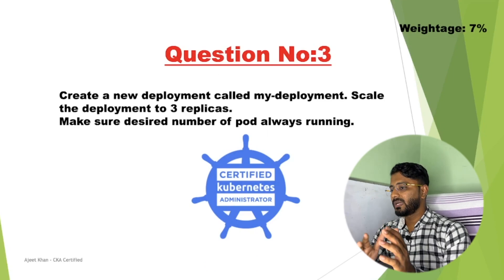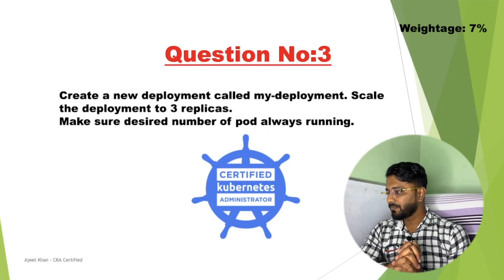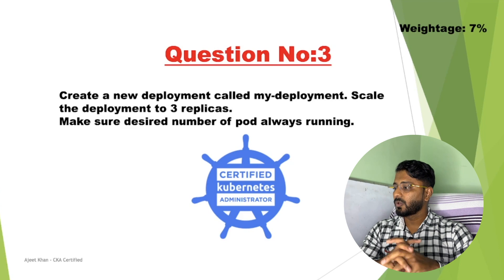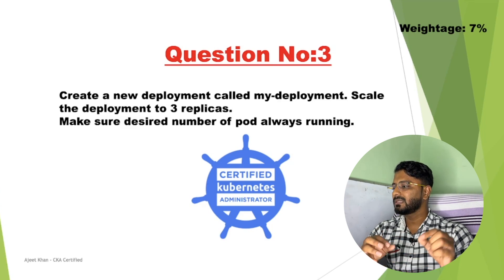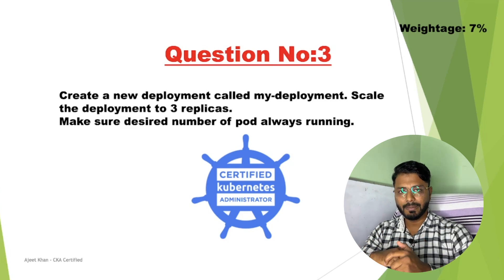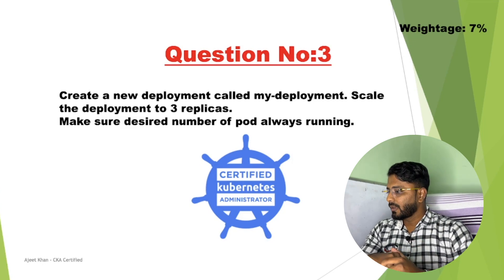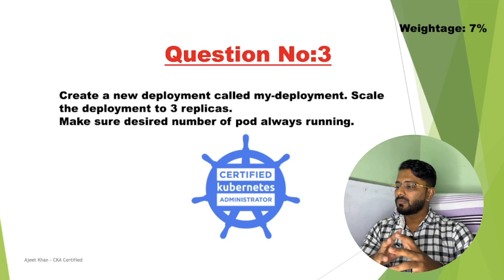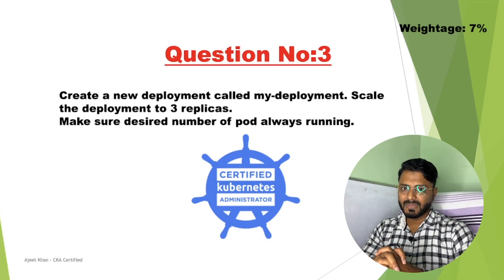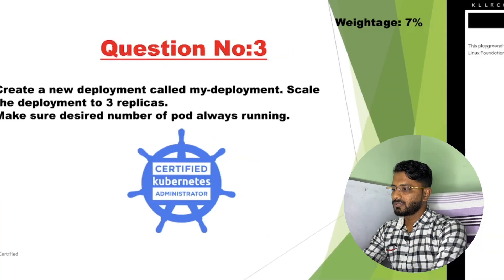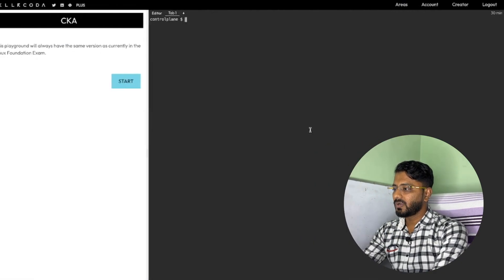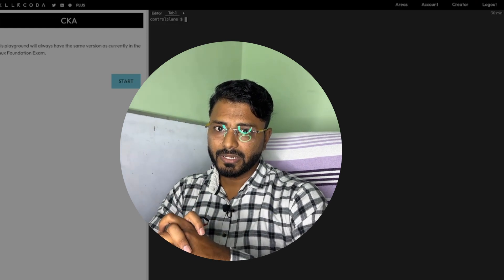The third question we are going to solve is worth seven percent. Question number three is: create a new deployment called 'my-deployment' and scale the deployment to three replicas — that means we should run three pods. We need to make sure the desired number of pods is always running, so three replicas of that pod must always be running. Let us go ahead and solve it. As we have seen, we are going to use the Killer Coda playground, which is free and you can use it too for practice.